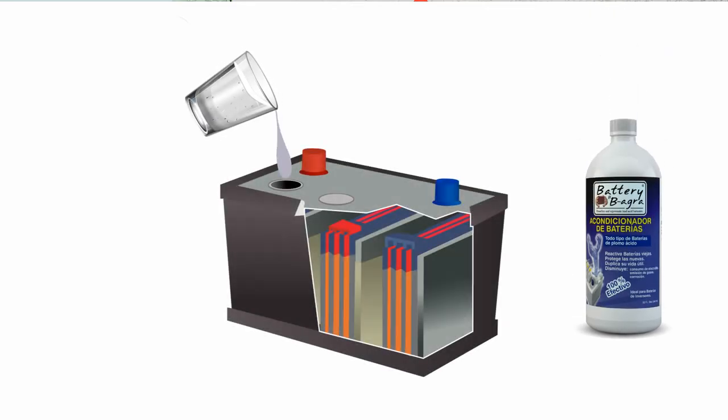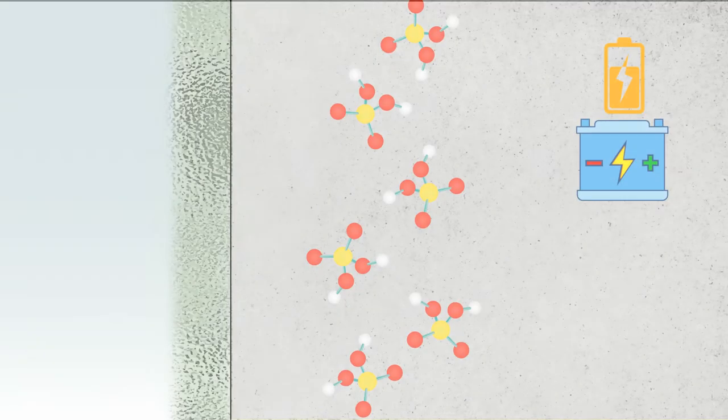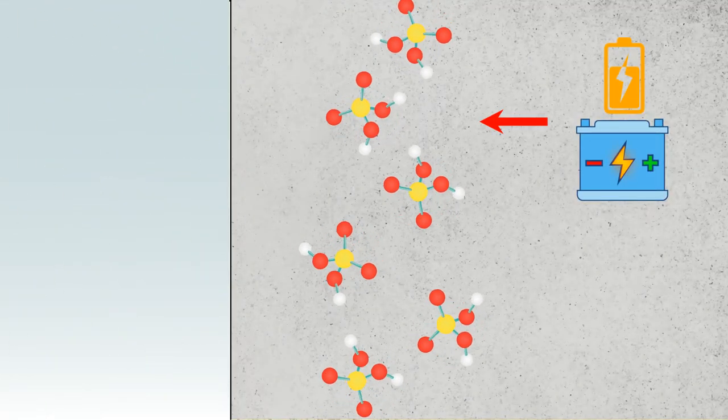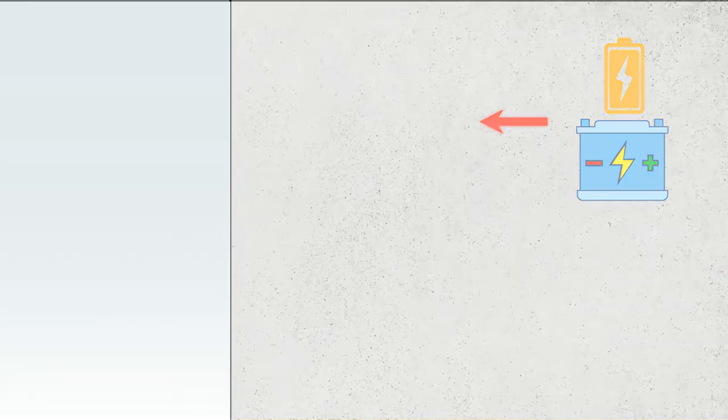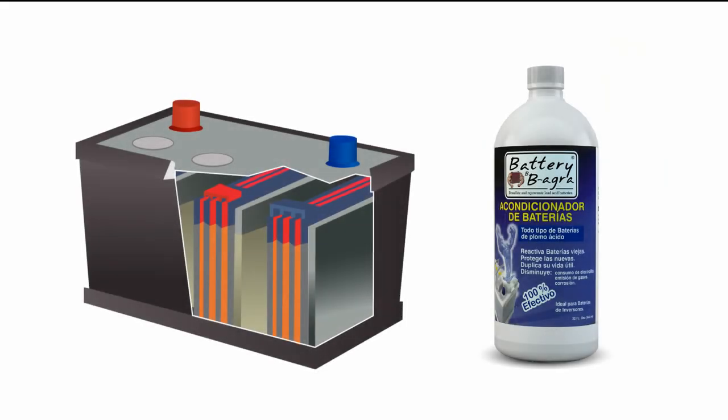A battery desulfator is designed to break down the lead sulfate crystals and restore the battery's ability to effectively complete the recharging process. By allowing the sulfuric acid to return to the electrolyte, further sulfation is prevented and the battery can be restored to most or all of its charging capacity.